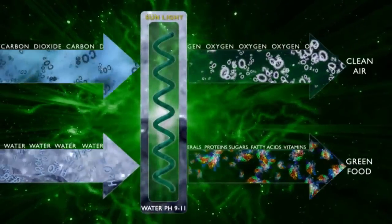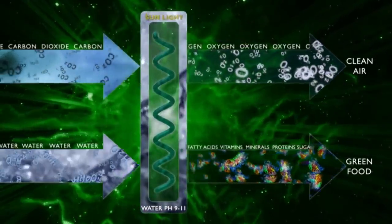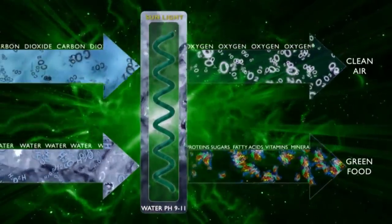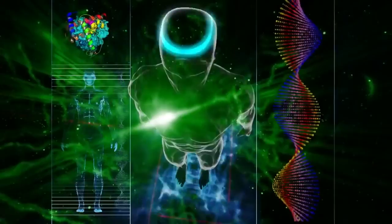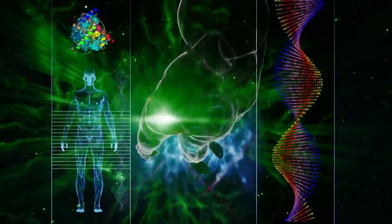Then, through a photosynthetic reaction, the cells produce protein, sugars, fatty acids and vitamins, as well as all the important minerals our bodies need.